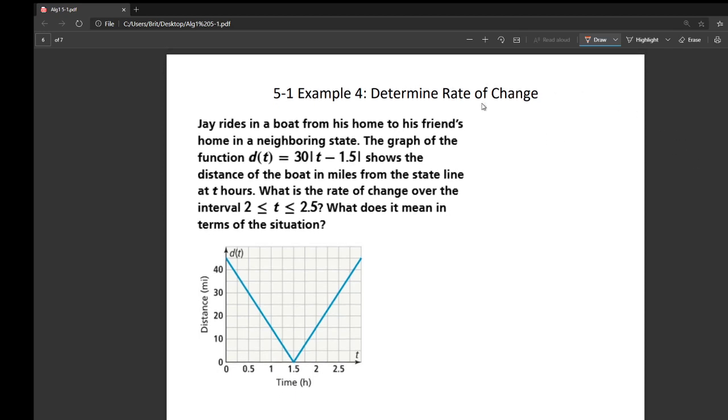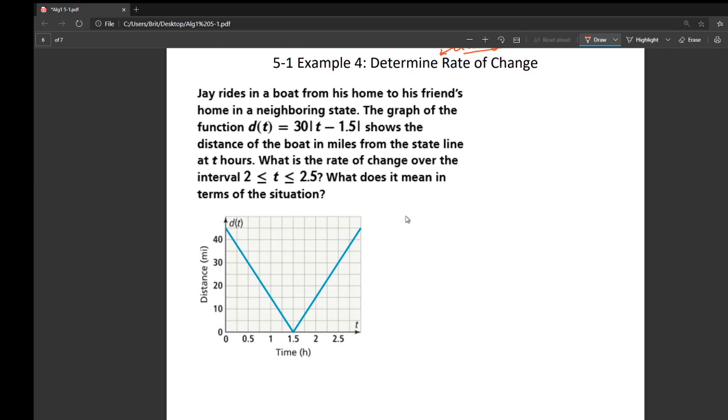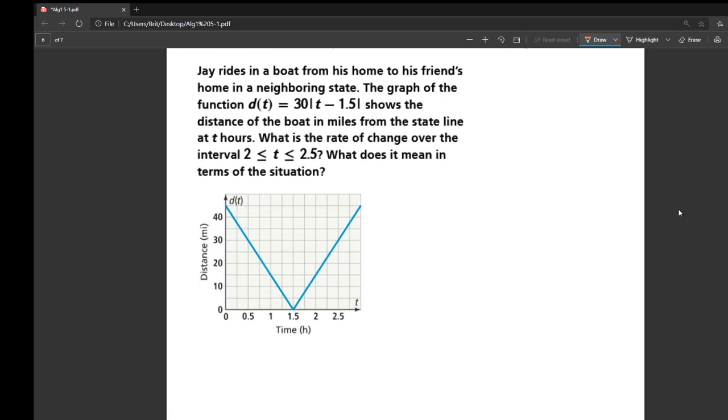It's important to recognize this is the average rate of change. That's a very big distinction in physics. They bring back J, our friend who rode in a boat in example 3, and they bring back his graph. What they're asking is, what is the rate of change over the interval from 2 to 2.5?